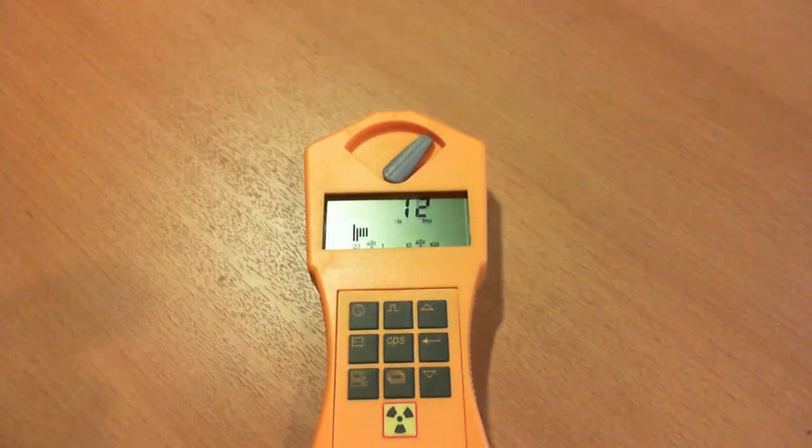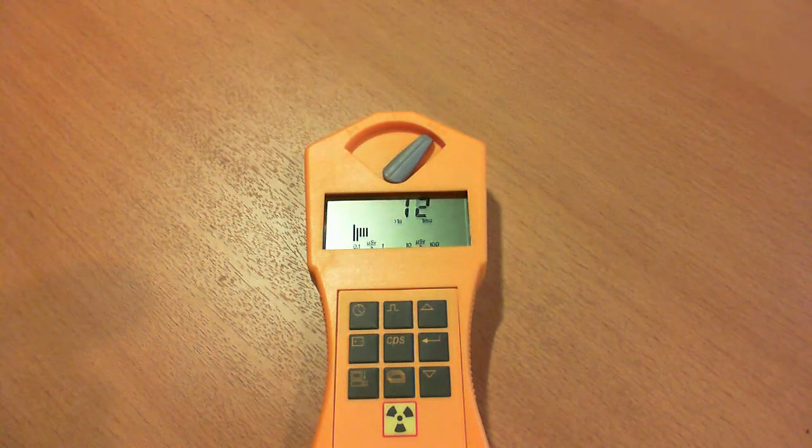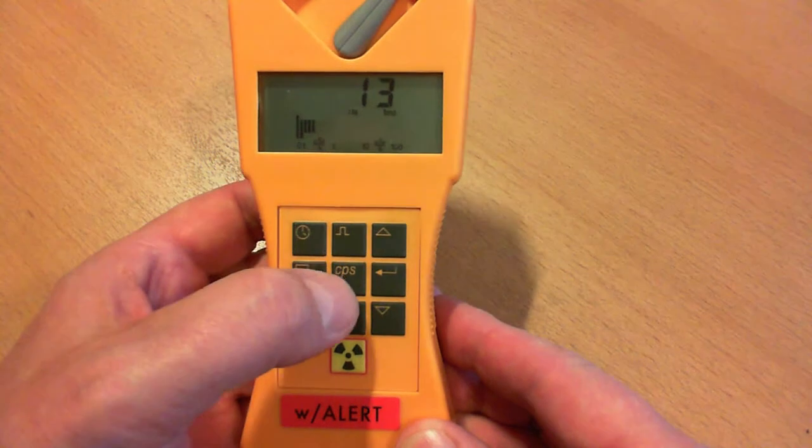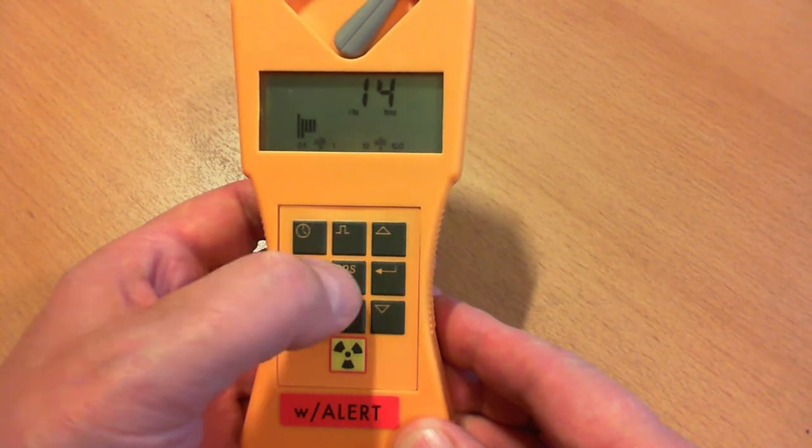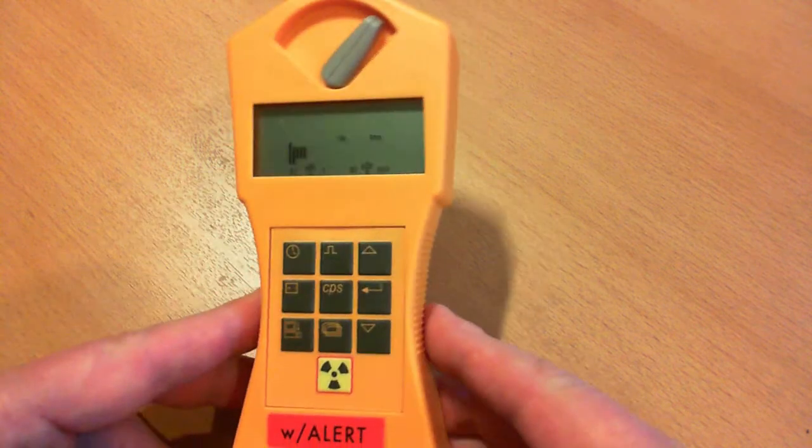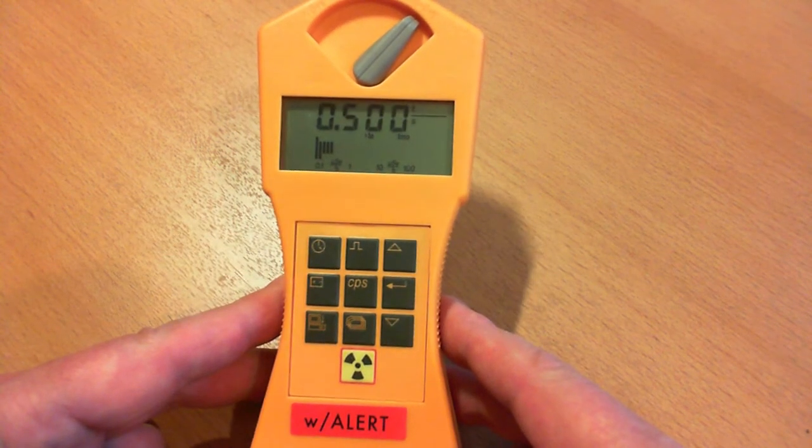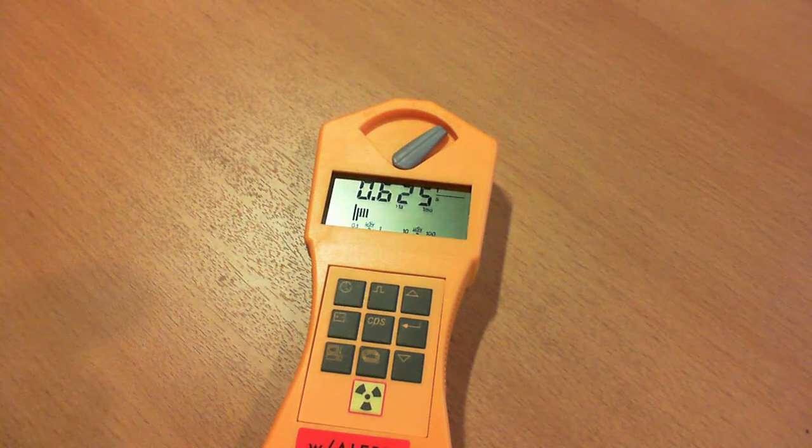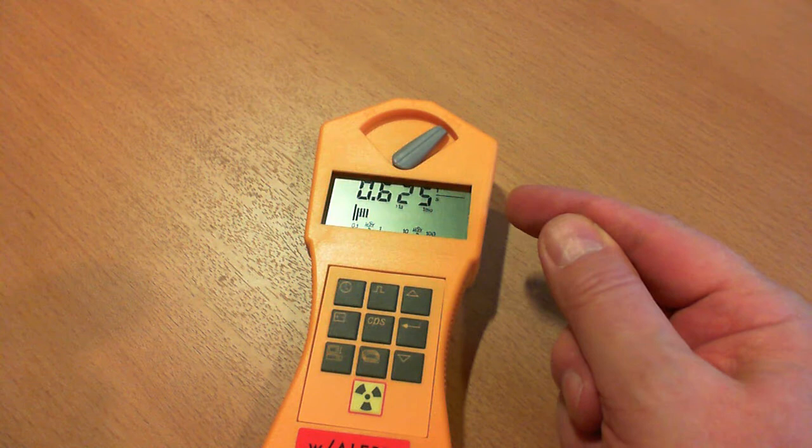What I find very practical is the CPS mode, count per second. An average is continually determined. That means I get determined values. At the beginning, you have large differences because the statistical average of the radiation event means that short measuring times don't bring much.